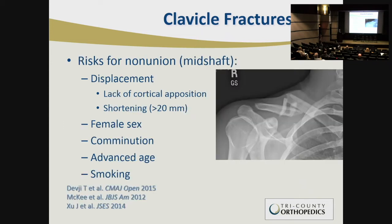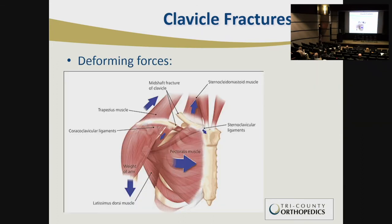Further findings, reinforced by recent studies, identified risk factors for nonunion of mid-shaft clavicle fractures: lack of cortical opposition, shortening of greater than 20 millimeters, female sex, comminution or multiple fragments, advanced age, and smoking. These have become relative indications for fixation. The deforming forces are key: medially the sternocleidomastoid pulls up on the proximal fragment, while laterally the deltoid and pec minor pull distally, compounded by gravity — leading to displacement and lack of cortical opposition.